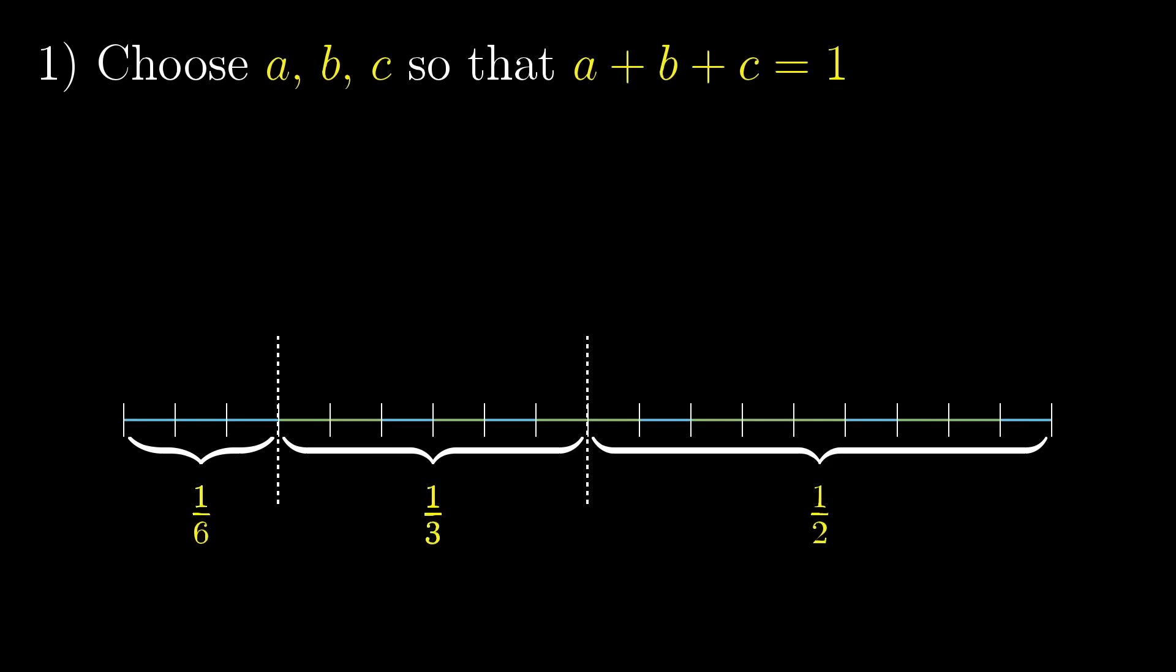But another way to think about that is to choose three positive numbers that add up to one. For example, maybe you choose one-sixth, one-third, and one-half, which correspond to these two cuts. Any time you find three positive numbers that add up to one, it gives you a way to cut the necklace, and vice versa.